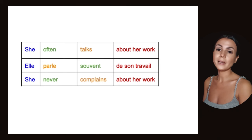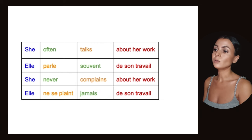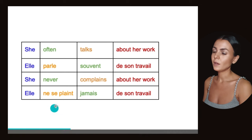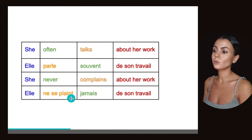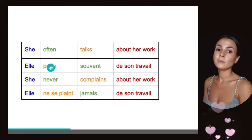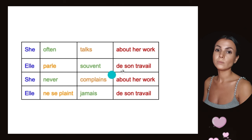One more: She never complains about her work. Same thing - Elle ne se plaint jamais de son travail. Once again, jamais goes after the verb. The verb goes first. She complains never - Elle ne se plaint jamais. Elle parle souvent de son travail.